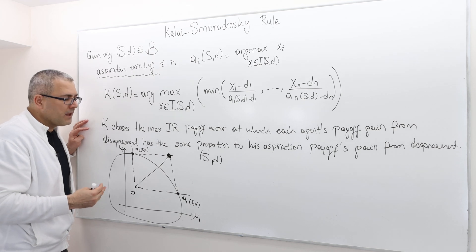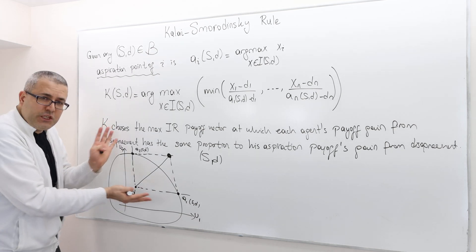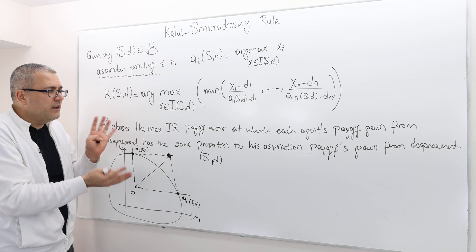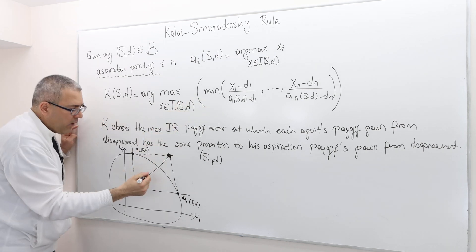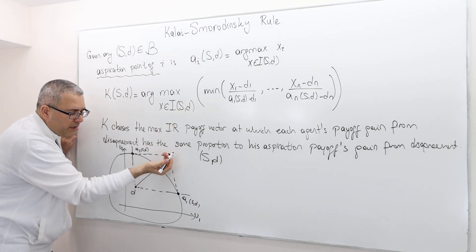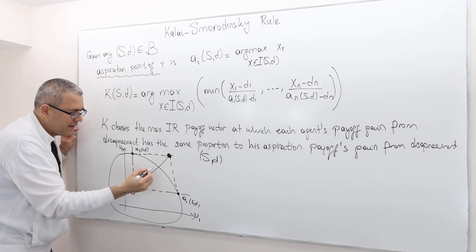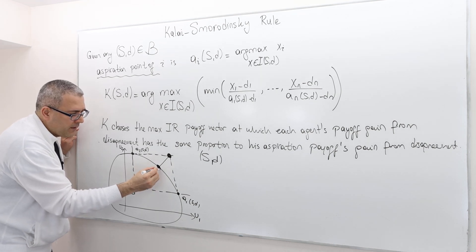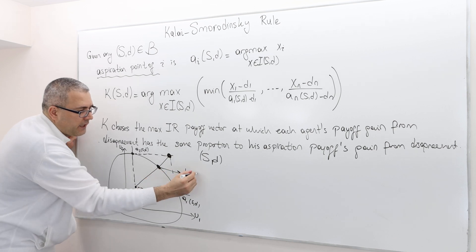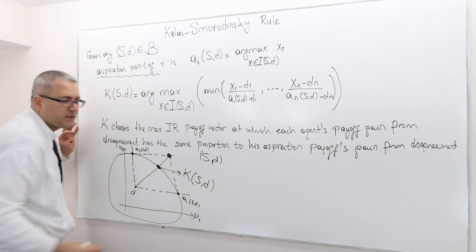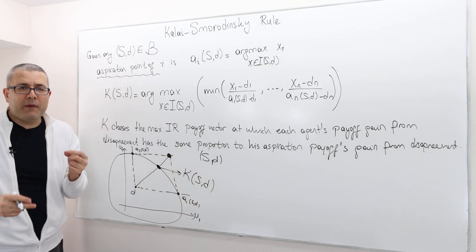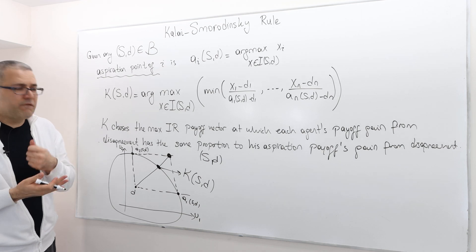How can I make it feasible? By keeping the ratios under control, I can do it by pulling this point towards the set S. This is what rule K proposes. Geometrically, this is how we find it.